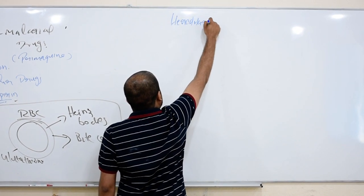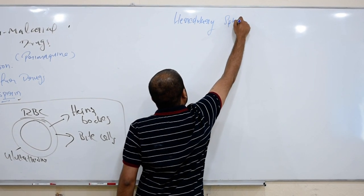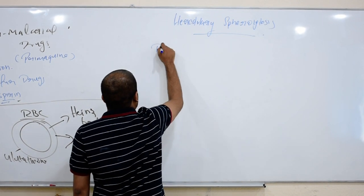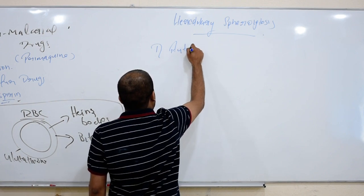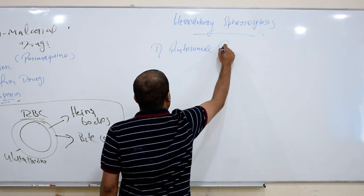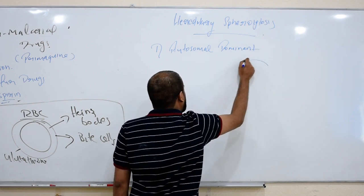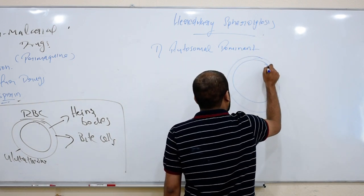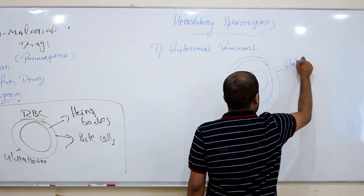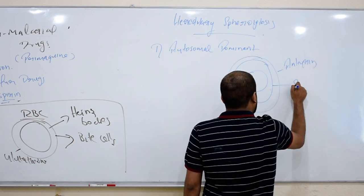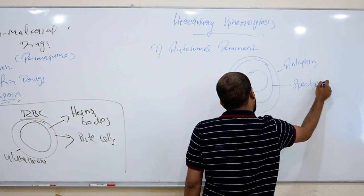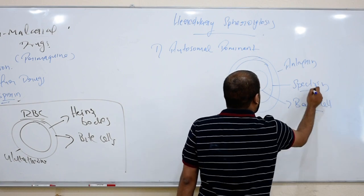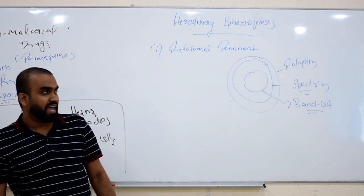Hereditary spherocytosis is also normocytic. Remember it is autosomal dominant, autosomal dominant. Normally for an RBC, its shape and size is maintained by three proteins: ankyrin, spectrin, and band cell.